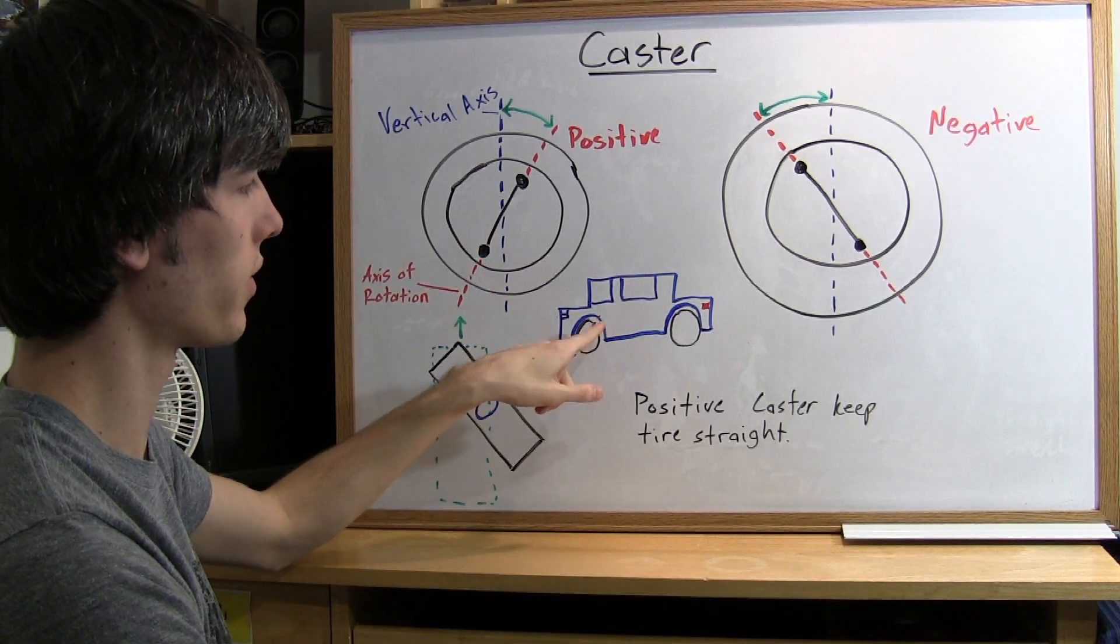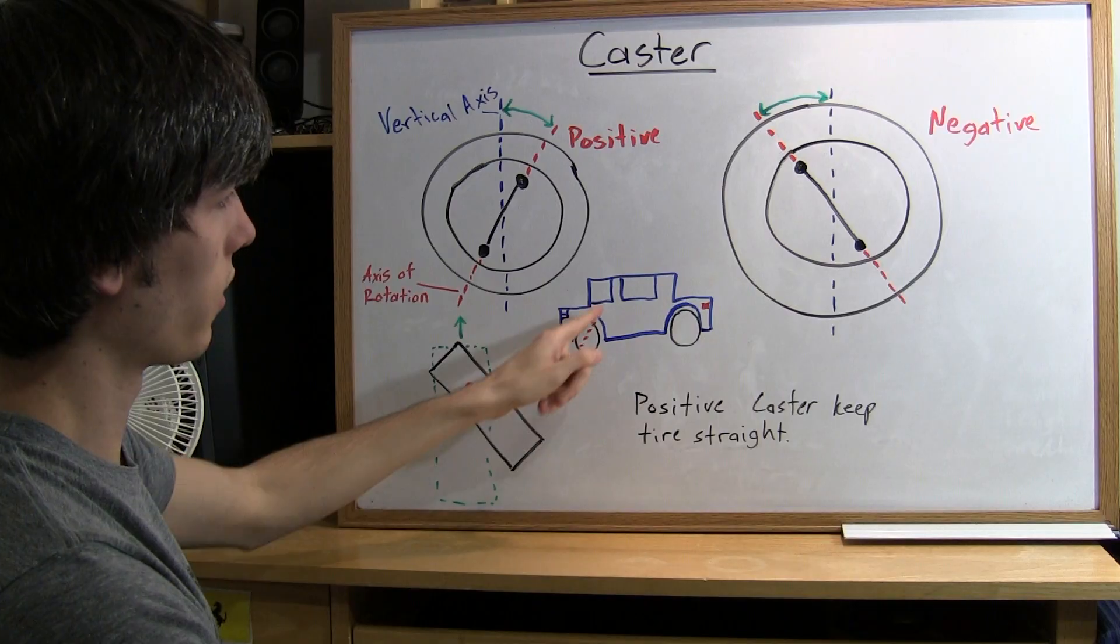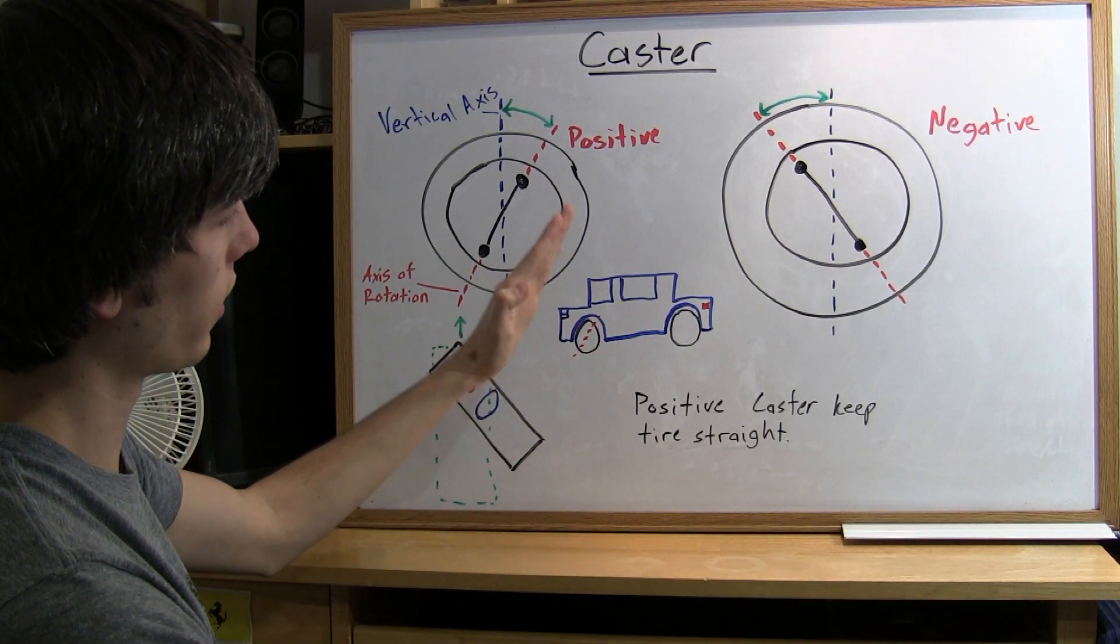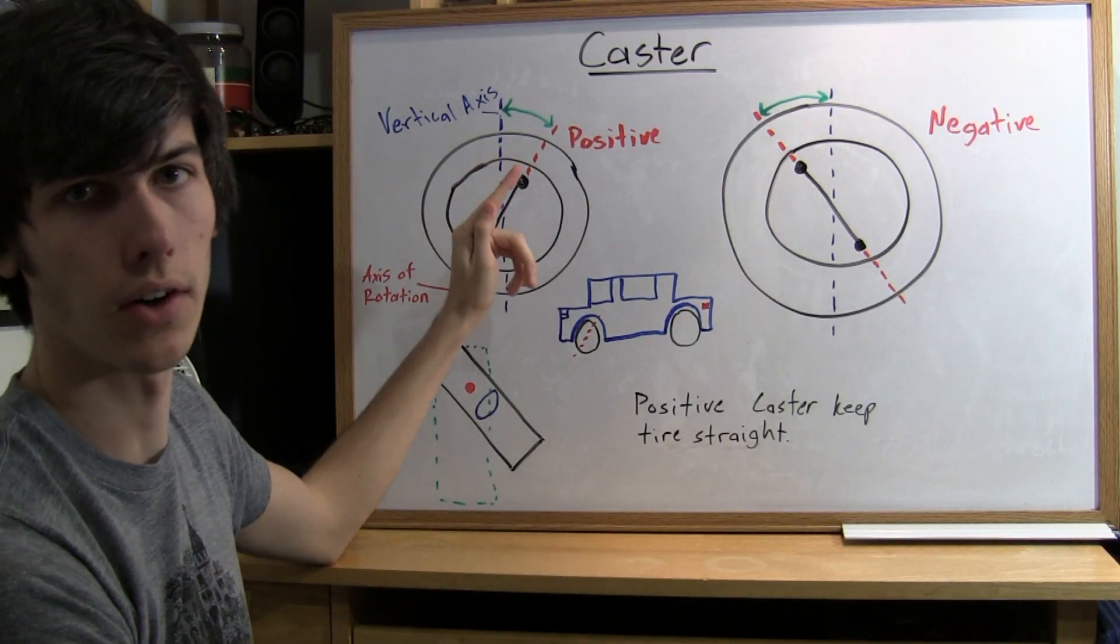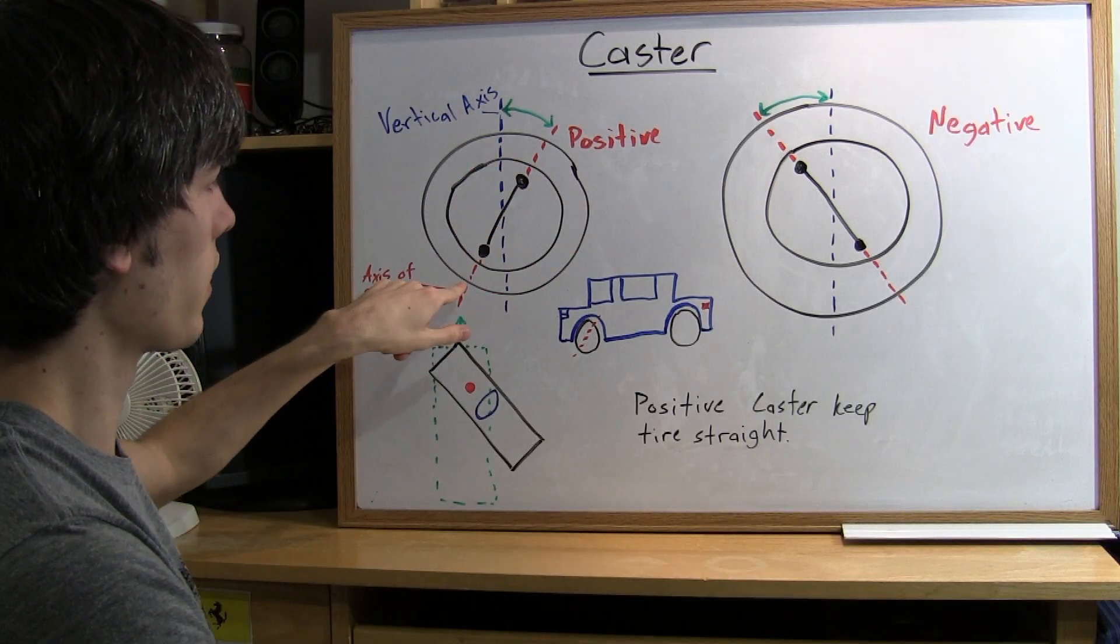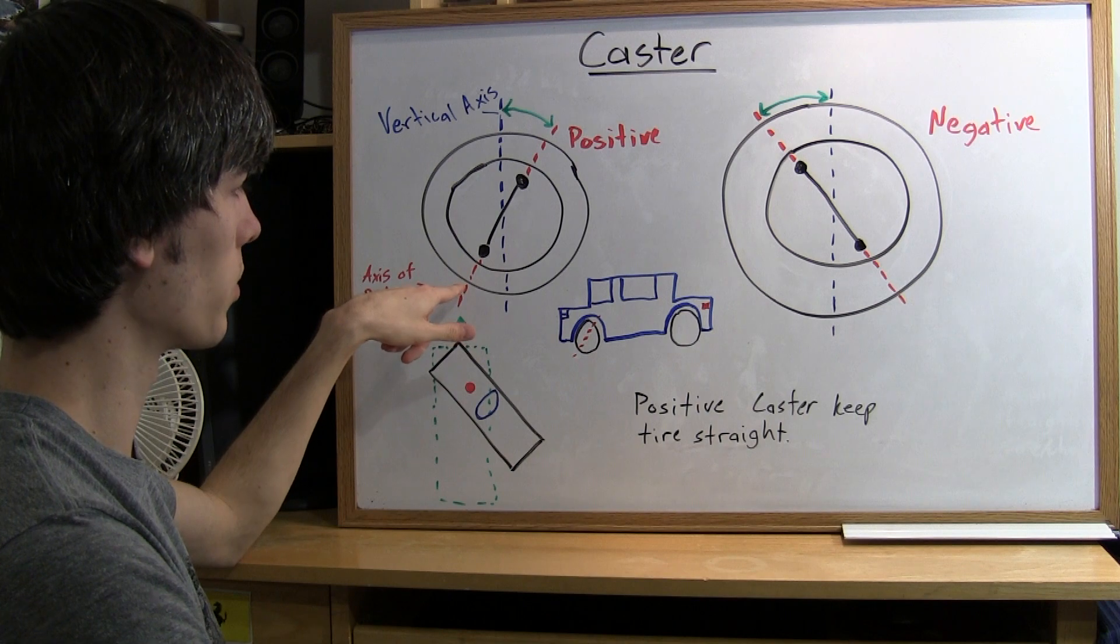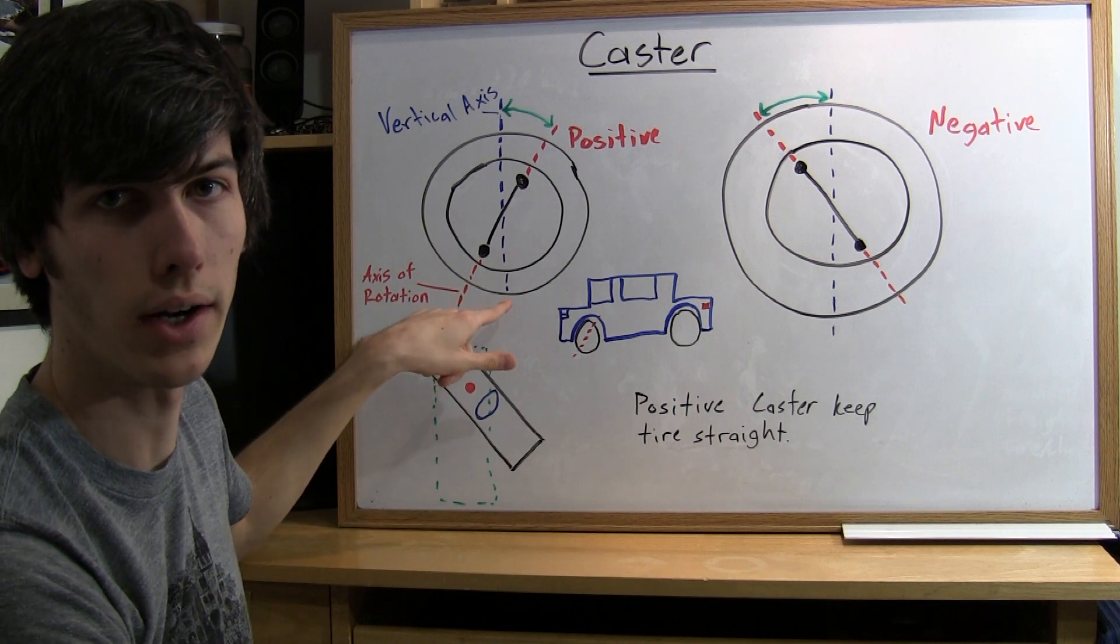If you look at the car from the side and the steering axis is inclined back this direction, that's going to be a positive caster. What positive caster does is the axis about which you rotate is going to be in front of the tire patch on the ground.